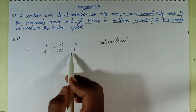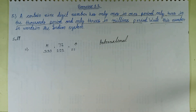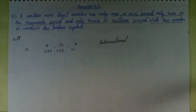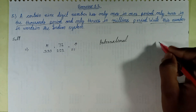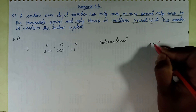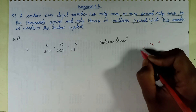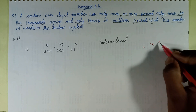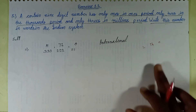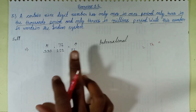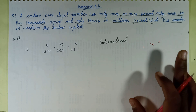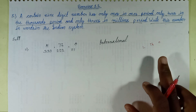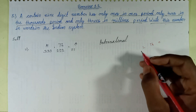Now write these numbers in the Indian System of Numeration. In the Indian system: the first 3 digits go in the ones period, the next 2 digits in the thousands period, the next 2 digits in the lakh period, and the next 2 digits in the crore period.